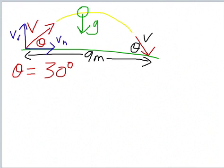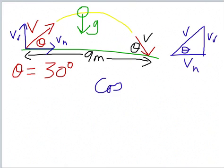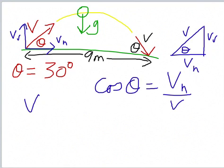What are the components? We've got trigonometry: theta, v, vv, and vh. So this is the opposite, the hypotenuse is the adjacent. We know that cos theta is adjacent over hypotenuse, it's vh over v, which means that vh equals v cos theta.